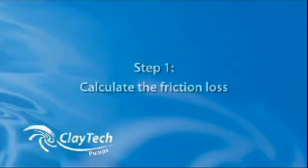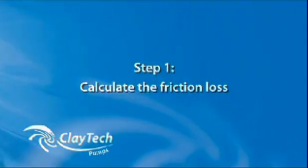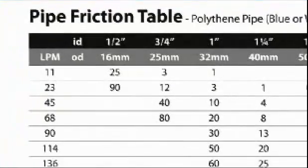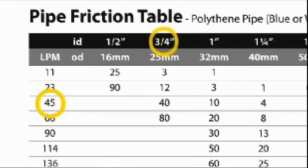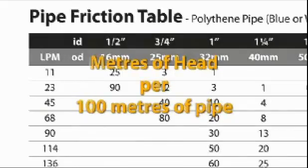The first step is to calculate friction loss. Remember, friction loss can be calculated using a pipe friction table. At 45 litres per minute and using a pipe 3 quarter inch in side diameter, we can see that there will be 40 metres of pressure lost to friction. However, in this chart, all values apply to 100 metres of pipe.